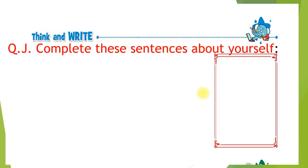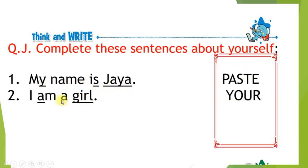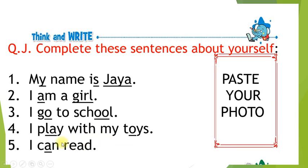Next: complete this sentence about yourself. Aapke baare mein sentence complete karna hai, aur aapni picture bhi paste karna hai. My name is Jaya — aapka jo naam hai woh likhna hai. I am a girl. If you are a boy, you can write: I am a boy. I go to school. I play with my toys. I can read. Okay students, thank you.